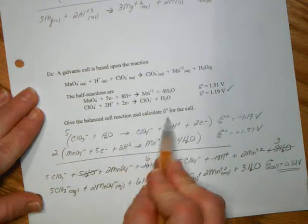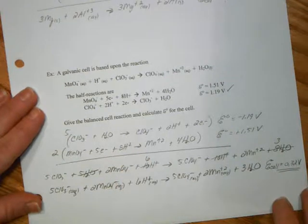There's the balanced cell reaction and the E naught of the cell. Now on to line notation.